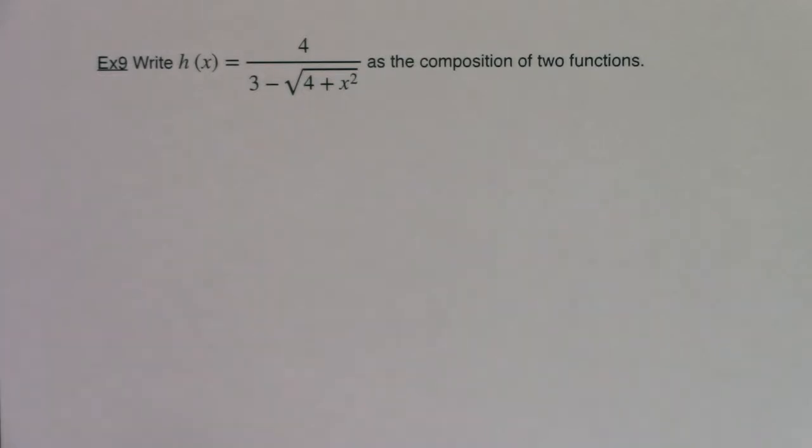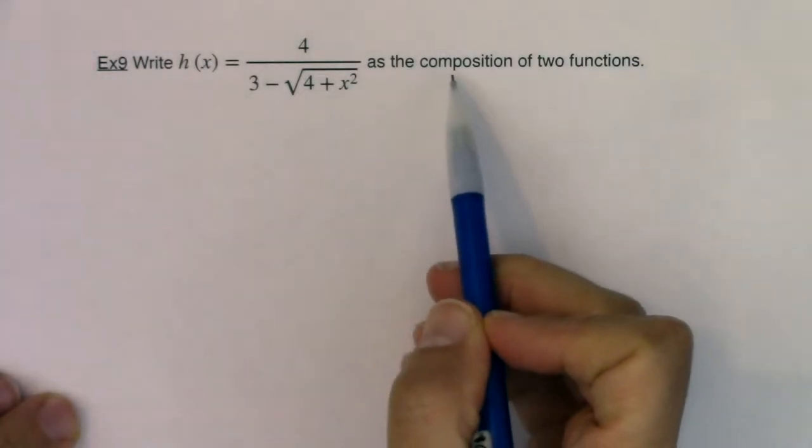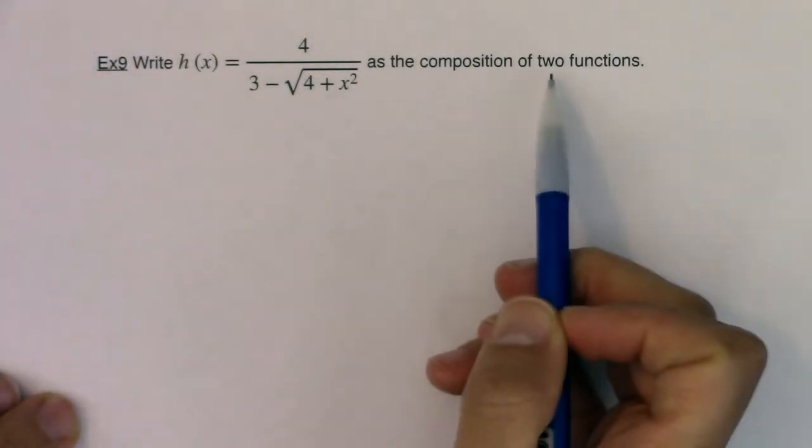Hey Math 31, let's take a look at our last example together. So we are given h of x, this nice fraction, 4 over 3 minus the square root of 4 plus x squared, and we would like to turn it into the composition of two functions.